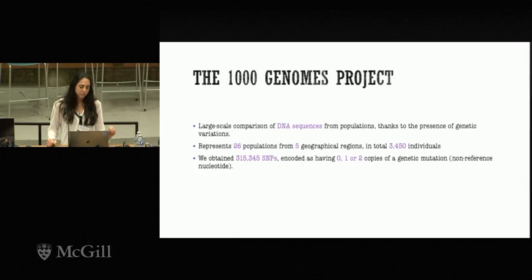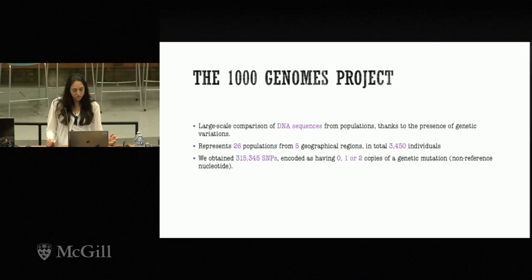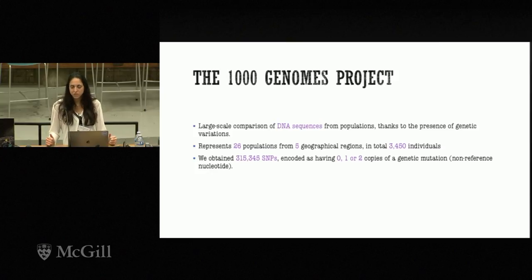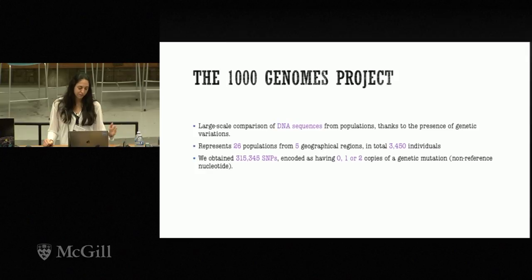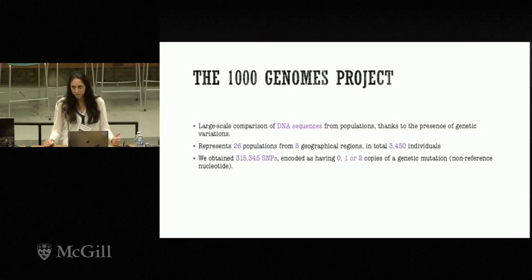We tested the model on the 1000 Genomes Project, a large-scale comparison of DNA sequences based on the presence of genetic variations. The dataset represents 26 populations grouped into five larger geographical areas. In total we have about 3,400 individuals, from which we extracted about 300k SNPs, encoded as having 0, 1, or 2 copies of a genetic variation.